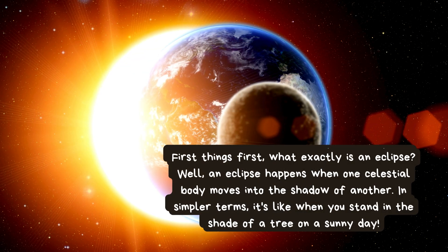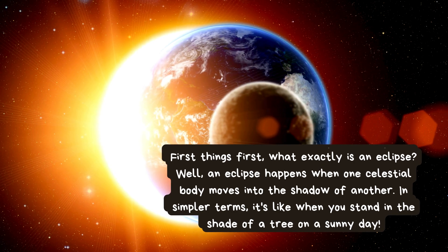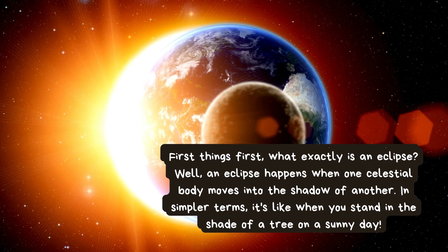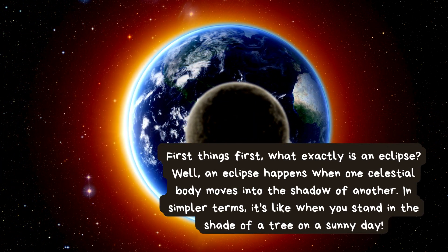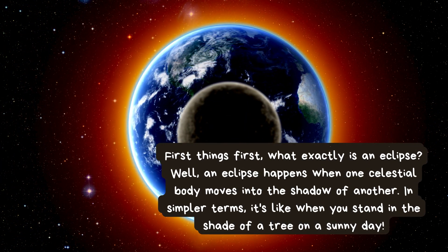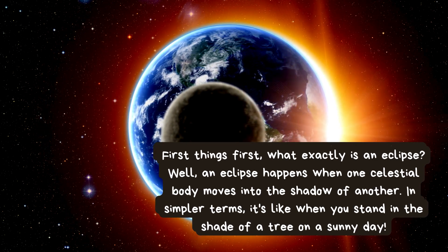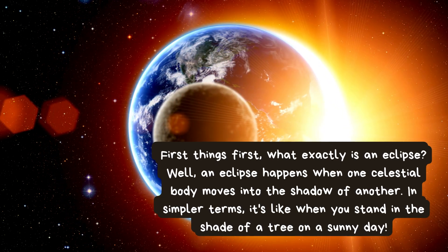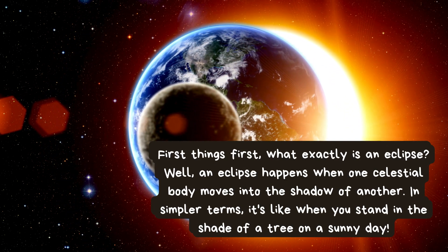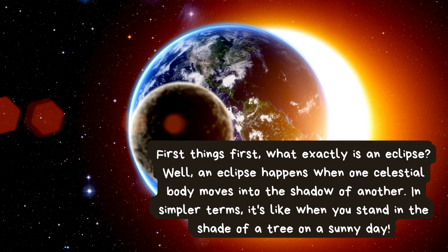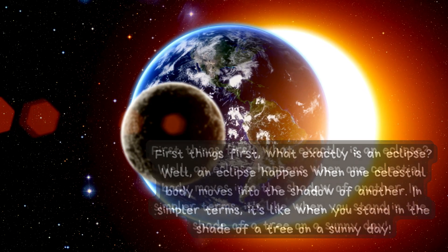First things first, what exactly is an eclipse? An eclipse happens when one celestial body moves into the shadow of another. In simpler terms, it's like when you stand in the shade of a tree on a sunny day.